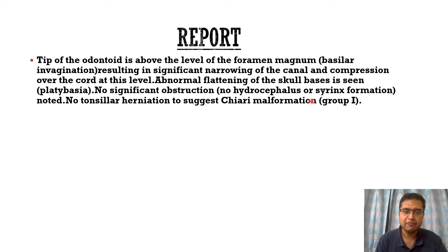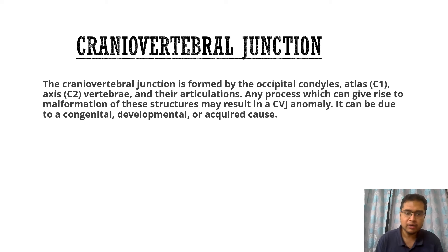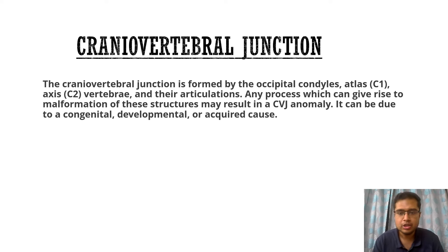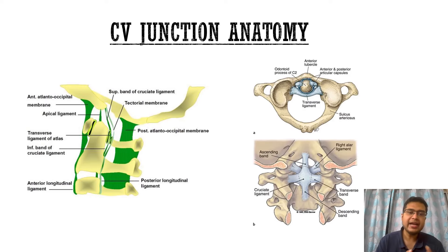Basilar invagination comes under the broad category of craniovertebral junction anomalies. The craniovertebral junction is formed by the occipital condyles, the atlas (C1 vertebra), the axis (C2 vertebra), and their articulations. Any process causing malformations of these structures results in a CVJ anomaly, which can be due to congenital, developmental, or acquired causes.